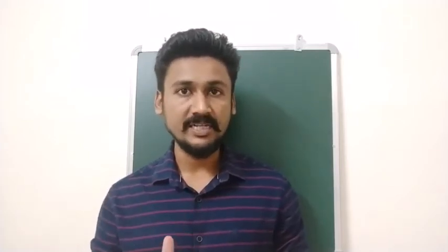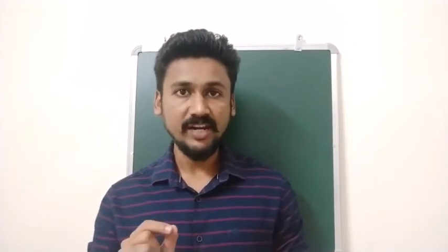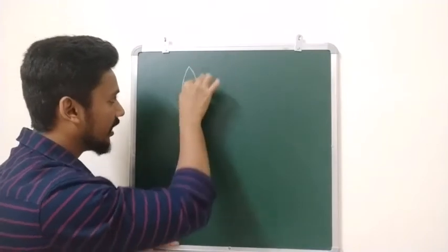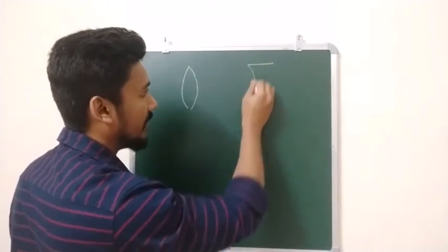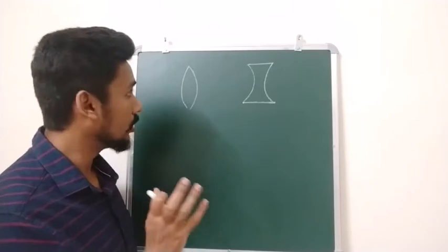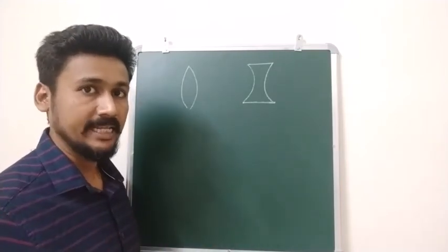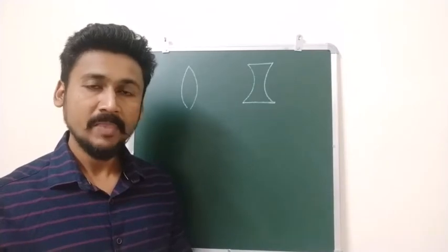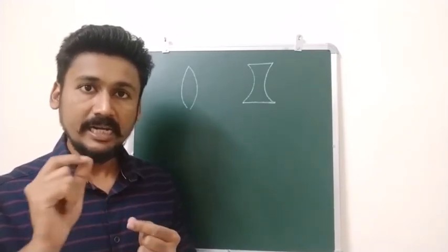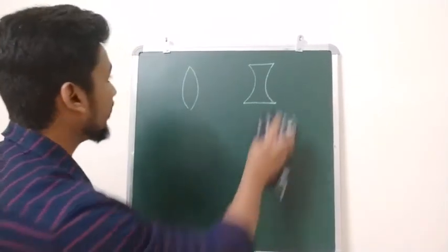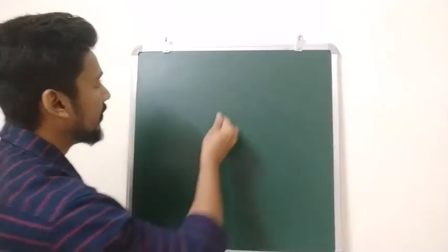Now we move to the next part of the chapter: refraction by spherical surfaces, which means lenses — convex and concave. We will find a general formula for refraction whenever it takes place at any spherical surface. Imagine a spherical convex surface. This entire curved part is our spherical surface.